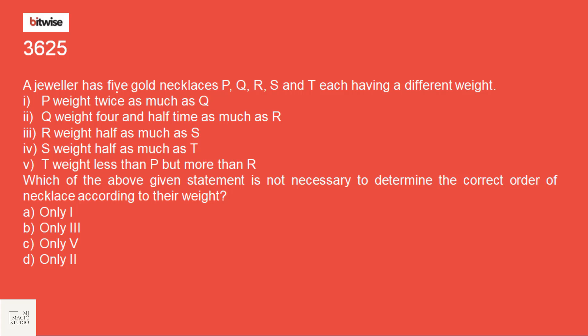A jeweller has 5 gold necklaces P, Q, R, S, T. Each having a different weight. P weight twice as much as Q. So if Q is X, P is 2X.